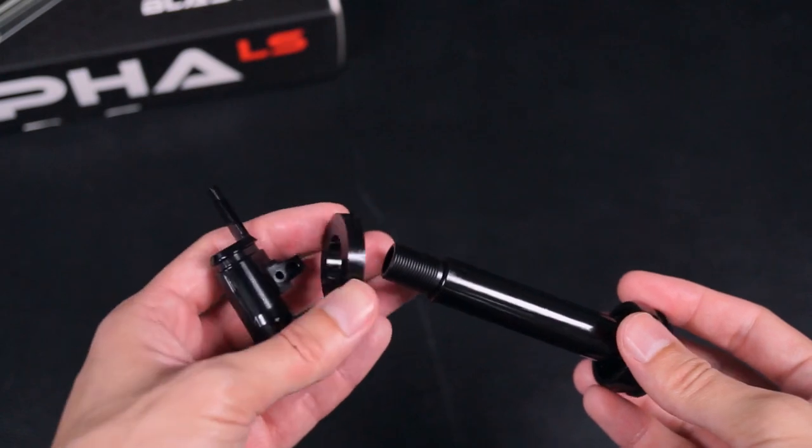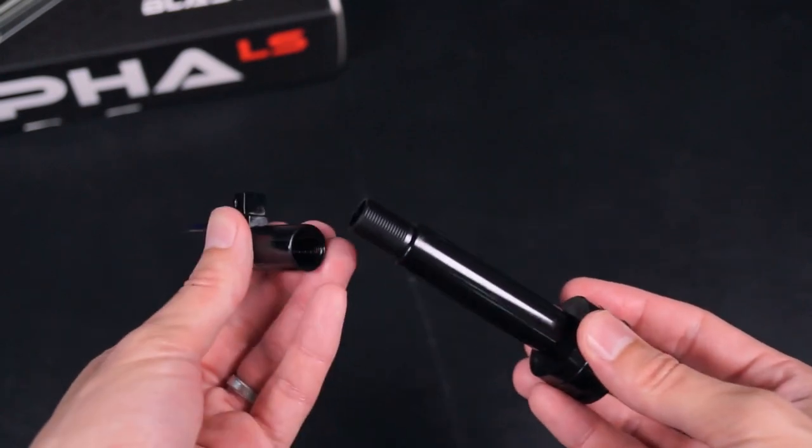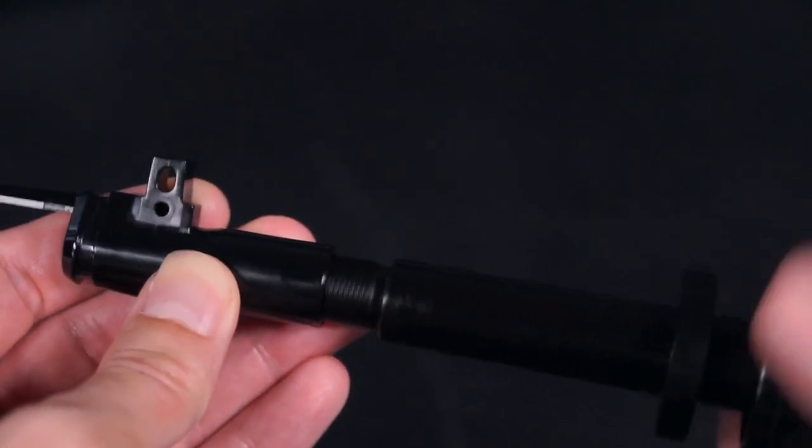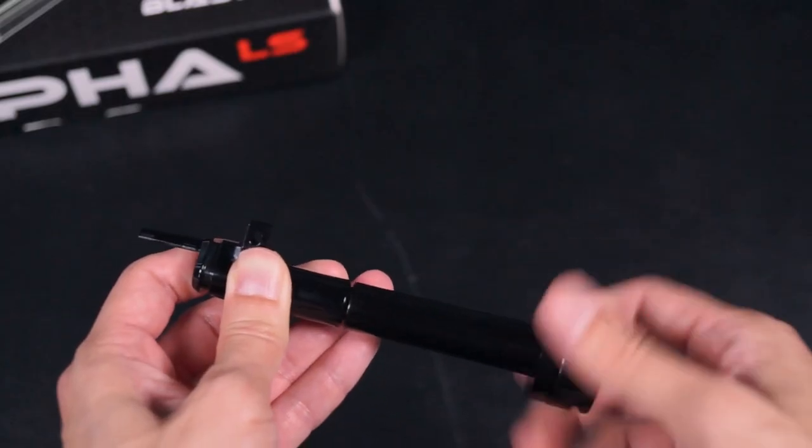Next will be the pusher assembly. Assemble the pusher in the orientation as shown. Apply some teflon tape or paste over the threads for a better seal. Do not over tighten the threading.